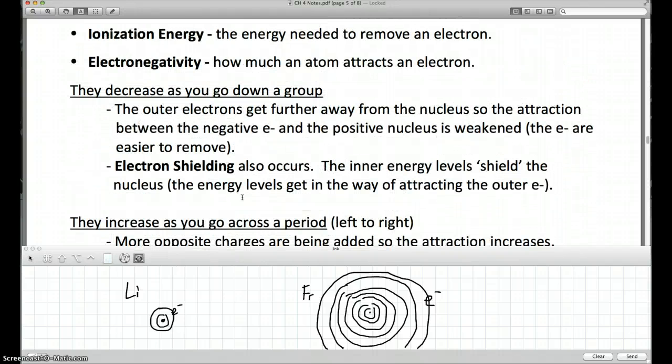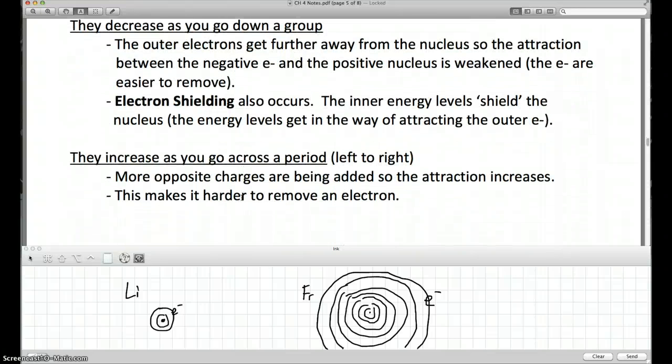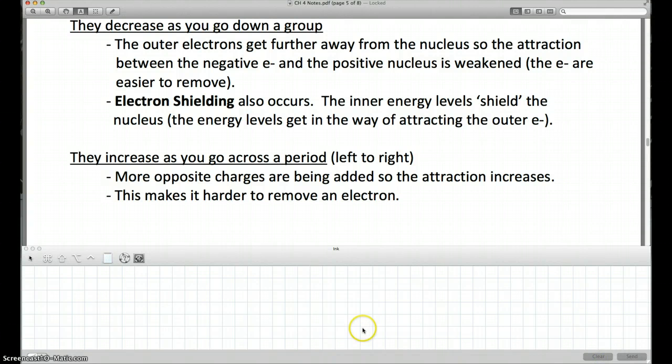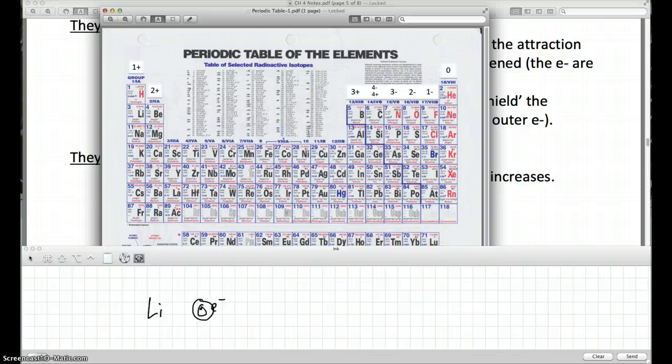Now, both of these things, ionization energy and electronegativity, increase as you go from left to right. And if I show you that, again I'll draw lithium. Two rings, and electron on that outer ring. Now if I draw fluorine, well it's got the same number of rings. And it's got a positive and a positive, negative, but it's got all these other negatives here.